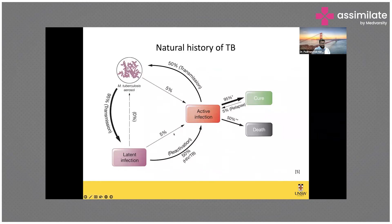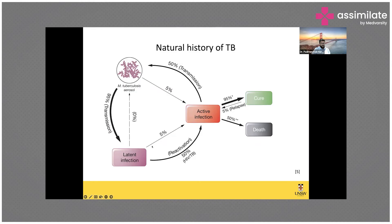The WHO estimates that nearly one third of the world's population has latent TB infection. In a PhD survey conducted in association with CMC Vellore, we found that 50 percent of household contacts and 50 percent of community members had latent TB infection — reflecting the very high infection burden in countries like ours. If you screen with the tuberculin skin test, about half will test positive for latent TB infection, and five percent of those will progress to active TB disease.